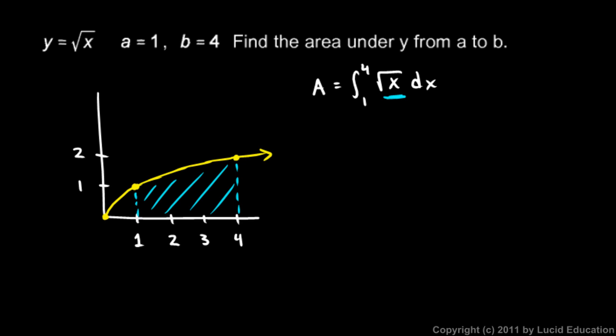So we need to find the anti-derivative of that function, and that's easy to do. Square root of x is x to the 1 half. So we just add 1 to the exponent. That makes it x to the 3 halves, and divide by the new exponent. So it would be x to the 3 halves divided by 3 halves. And dividing by 3 halves is the same as multiplying by 2 thirds. So when we integrate this, we get 2 thirds x to the 3 halves.